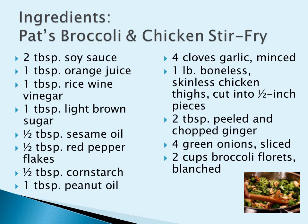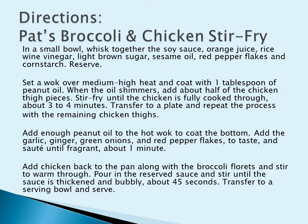Broccoli is typically sold in one of two ways: either fresh and whole, or frozen in florets and spears. If you buy it whole, you have to chop the florets yourself. Either way, you have to do the blanching at home. The layout of the directions suggests that there are four processes in this recipe: one, make the sauce; two, cook the chicken; three, saute the vegetables; and four, put it all together.